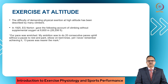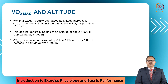Exercise at altitude has been described by E.G. Norton, who gave this account of climbing without oxygen at 8600 meters. He says, 'Our pace was wretched. My ambition was to do 20 consecutive paces uphill without a pause to rest and pant, elbow on bent knee. Yet I never remember achieving it — I could only achieve 13 paces.' We can walk 3, 4, 5 kilometers at sea level normally, but at 8600 meters, this trained mountaineer could not walk more than 13 steps. This is the effect of altitude on physical activity.